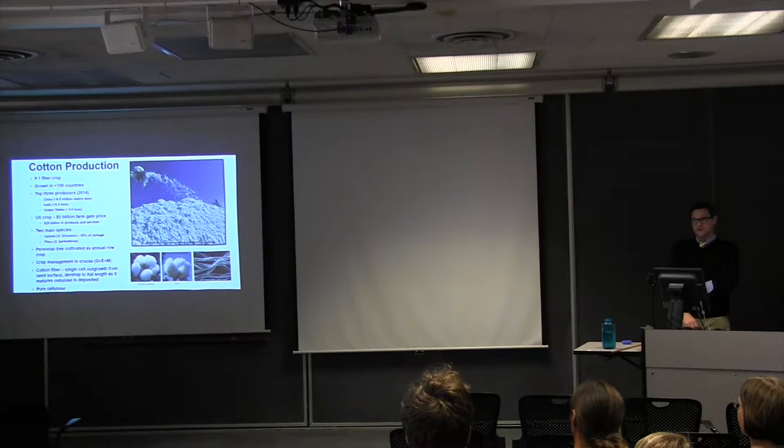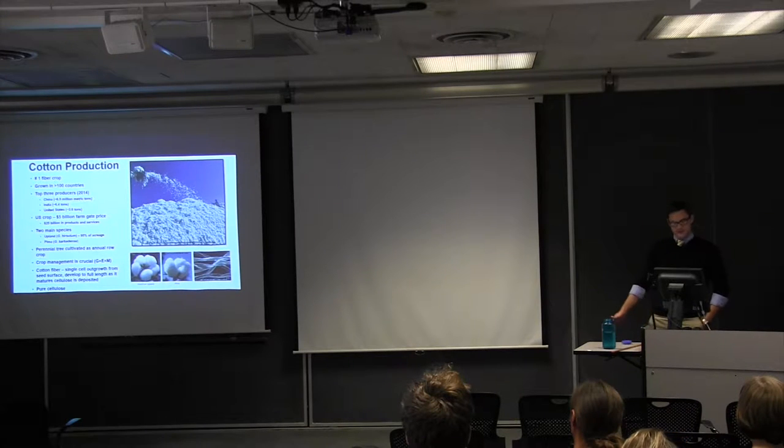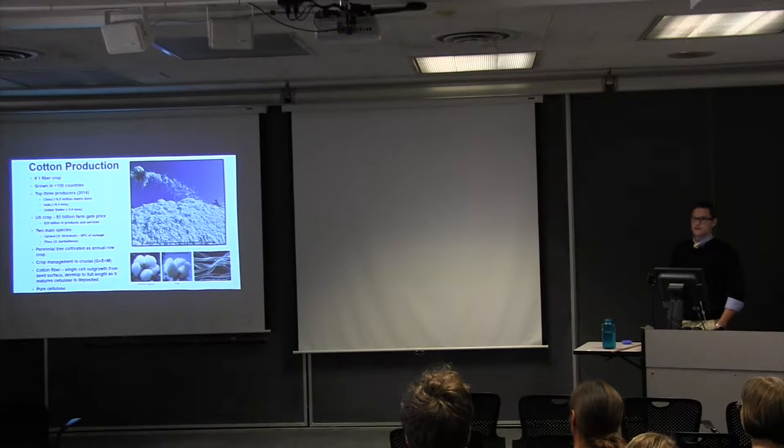So here at home, the U.S. crop is worth about $5 billion at a farm gate value. This translates into about $25 billion in terms of goods and services that's related to cotton production. There are two main species of cotton. There's Upland cotton, and that constitutes about 95% of the acreage in production. That is what most of us are wearing currently. And then the other variety is Pima, and this is more commonly called Egyptian cotton or Sea Island cotton.